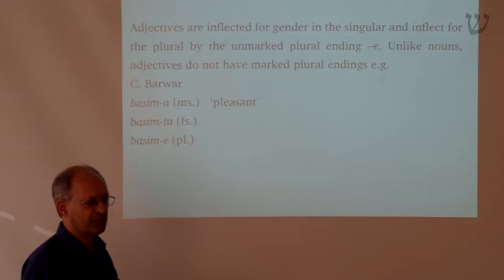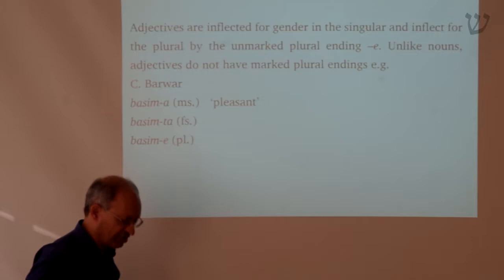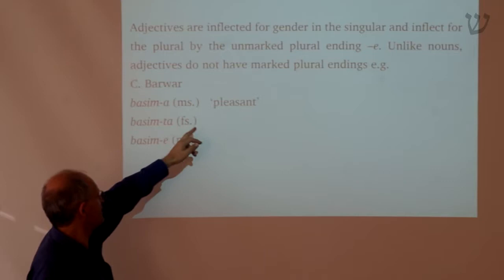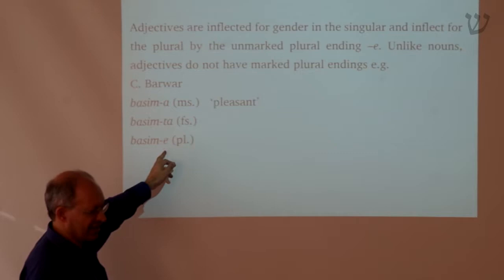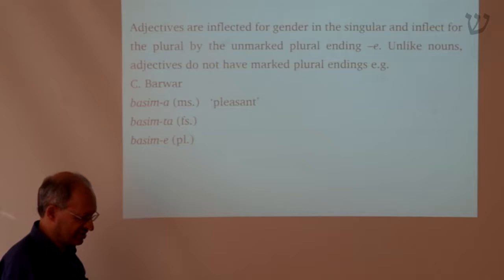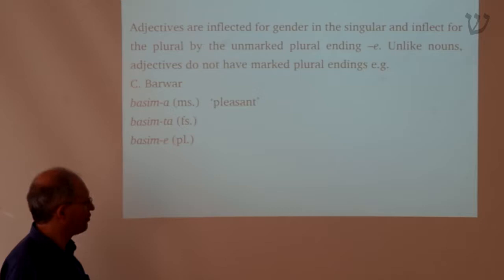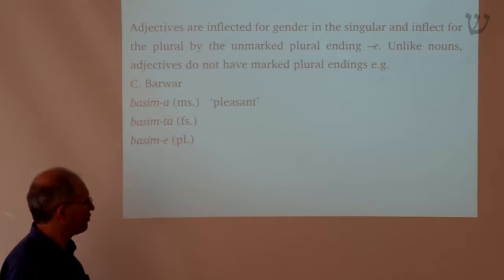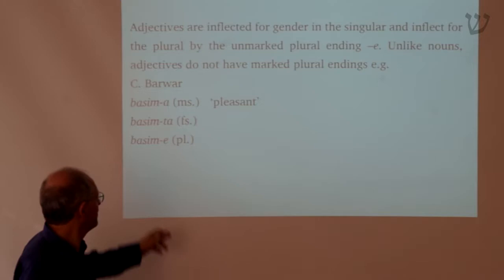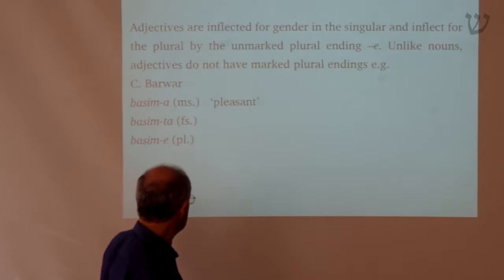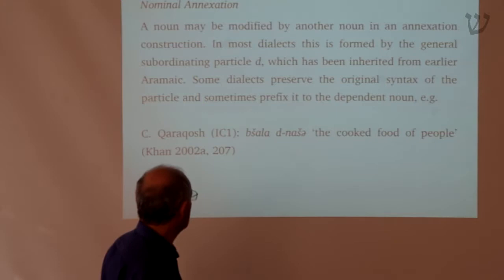When we come to adjectives, the morphology is far more simple. We have a masculine adjective ending in 'a', like 'basima' (pleasant), and the feminine in 'ta' — 'basinta' — and the plural in 'e', which is the basic plural form. All adjectives have a plural ending 'e' for both masculine and feminine nouns, regardless of the form of the plural of the noun. So the inflection of adjectives is far more systematic — it's reduced down to a much simpler system.